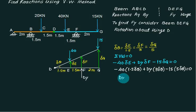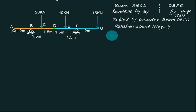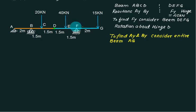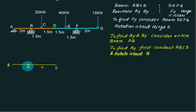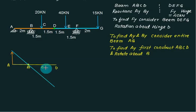Solve for DY first. To find AY and DY, consider the entire beam from A to G. To find AY, rotate about B. B is the midpoint, so half the portion will come upward and half will go downward. First draw this part — this portion will go upward, this will go downward, and this will go downward.